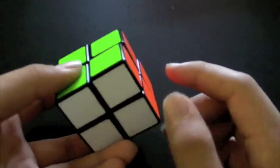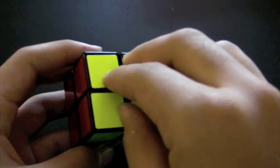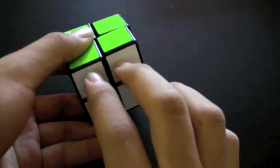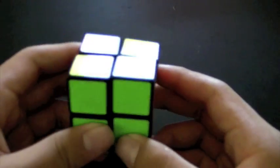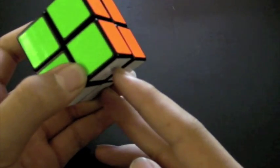CLL, of course, is just when you have the bottom layer is already solved, and then you just permute and orient the top layer. EG1 is when you have an adjacent swap in the bottom. There are 40 of those algorithms. And then EG2 is when you have a diagonal swap on the bottom.